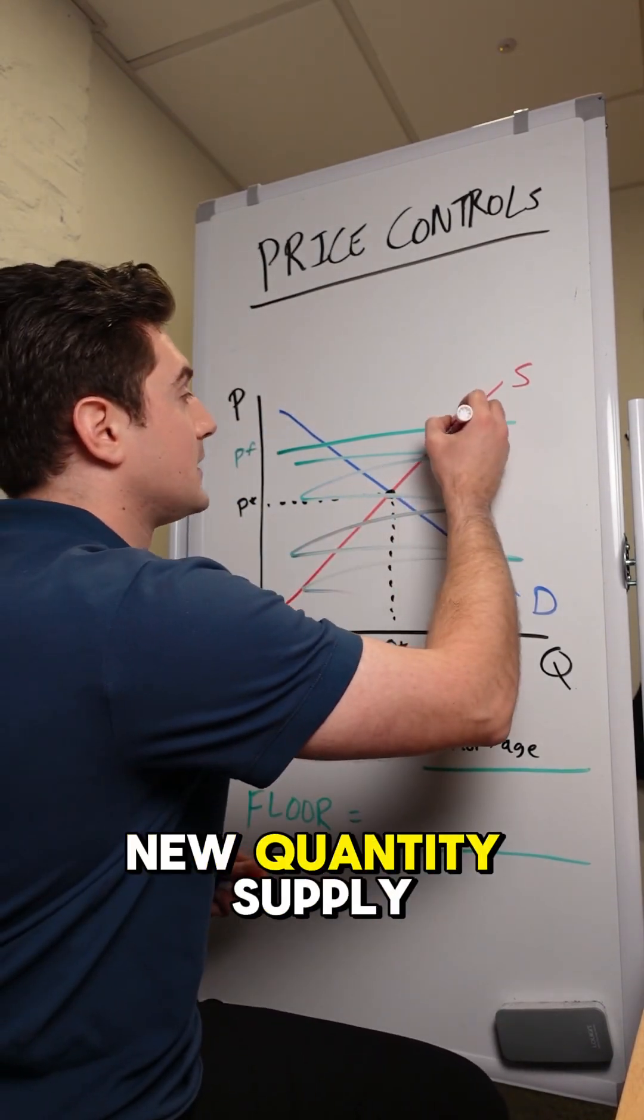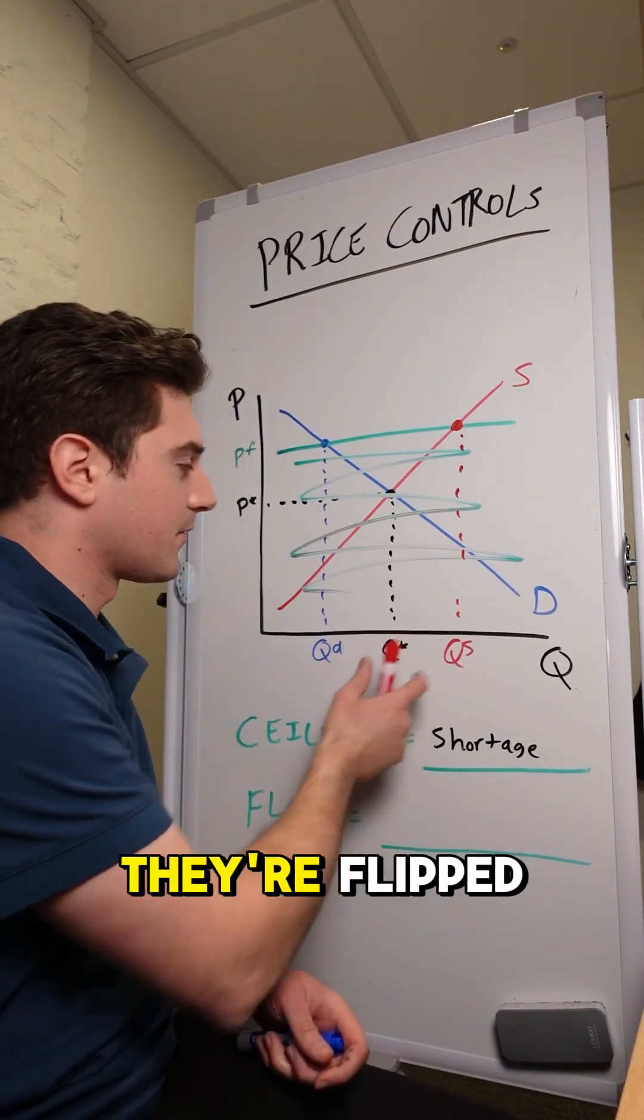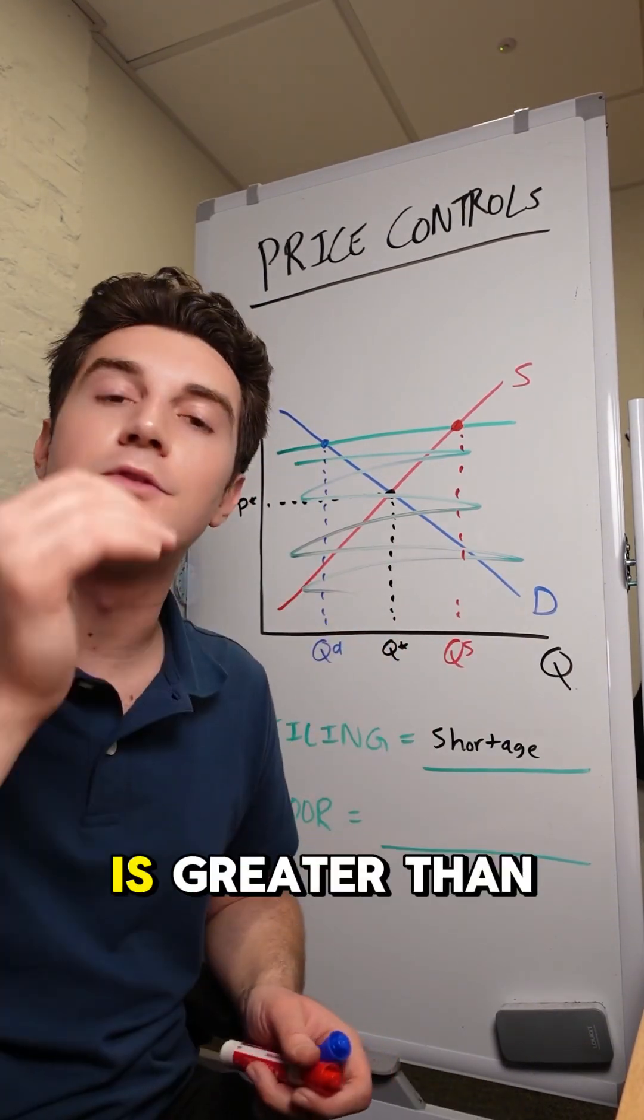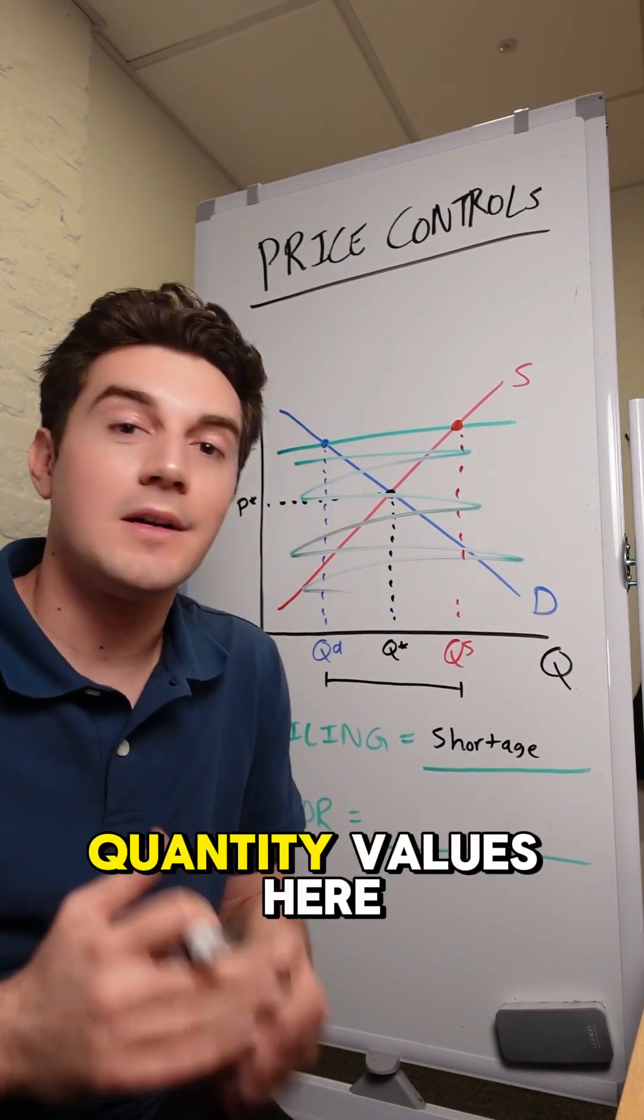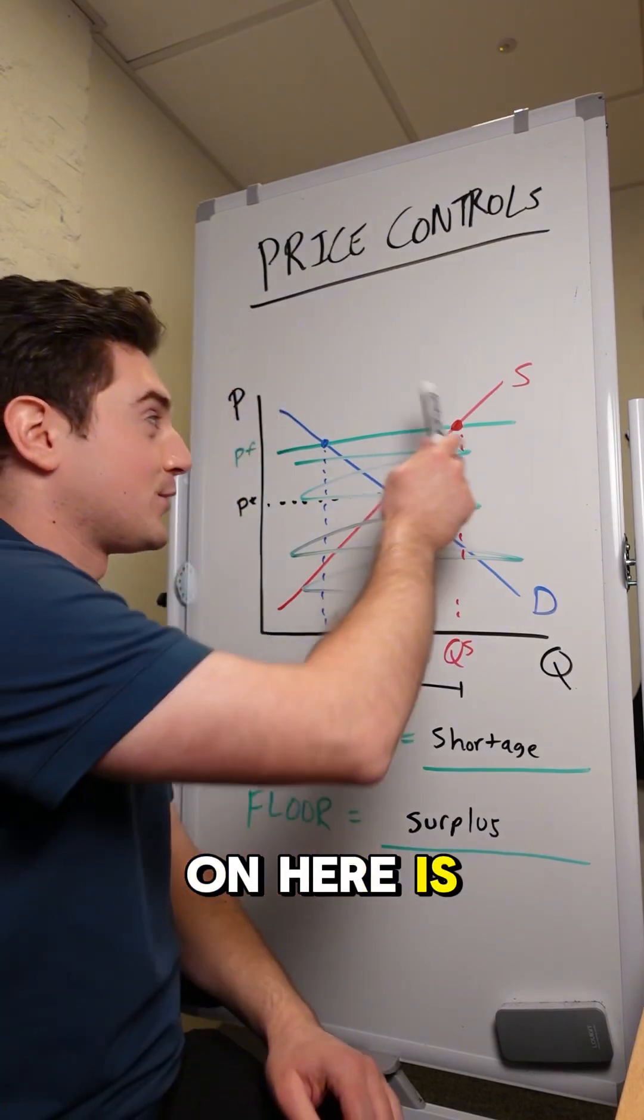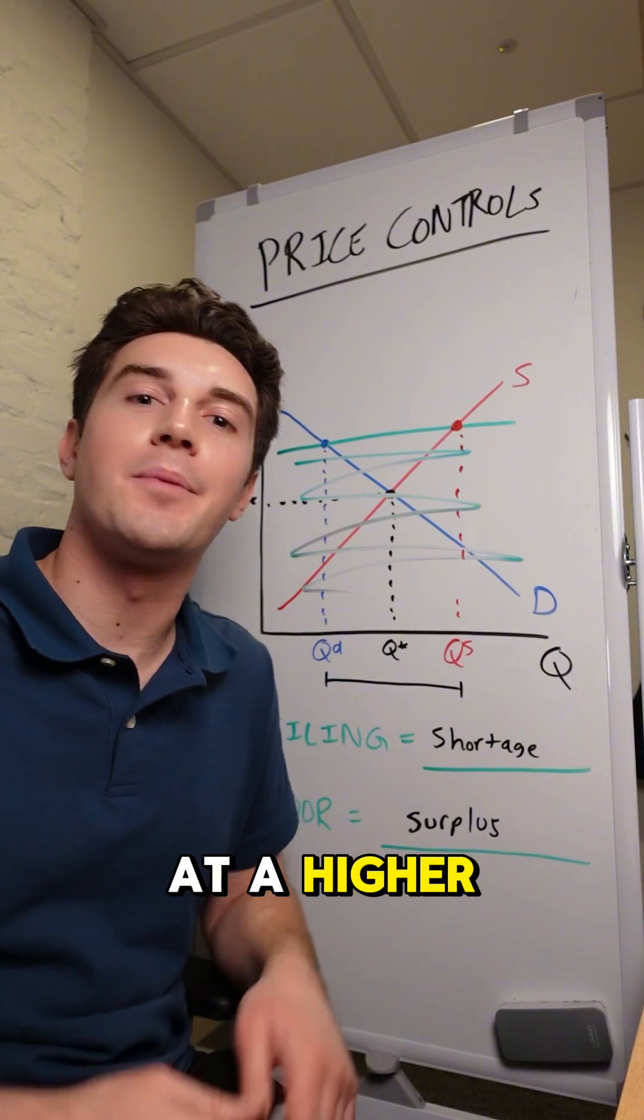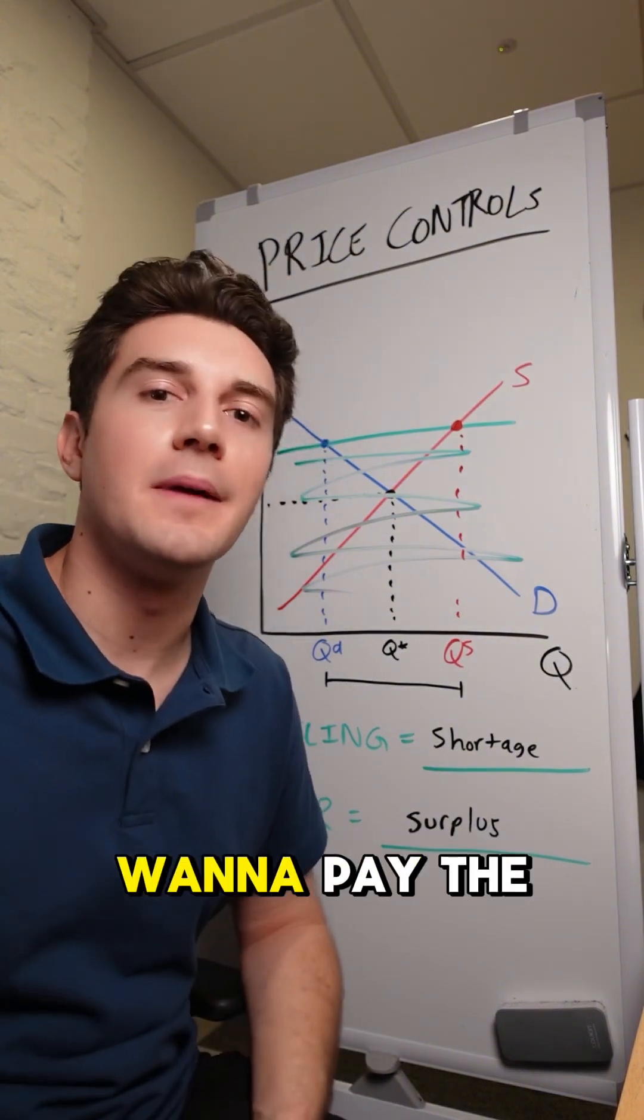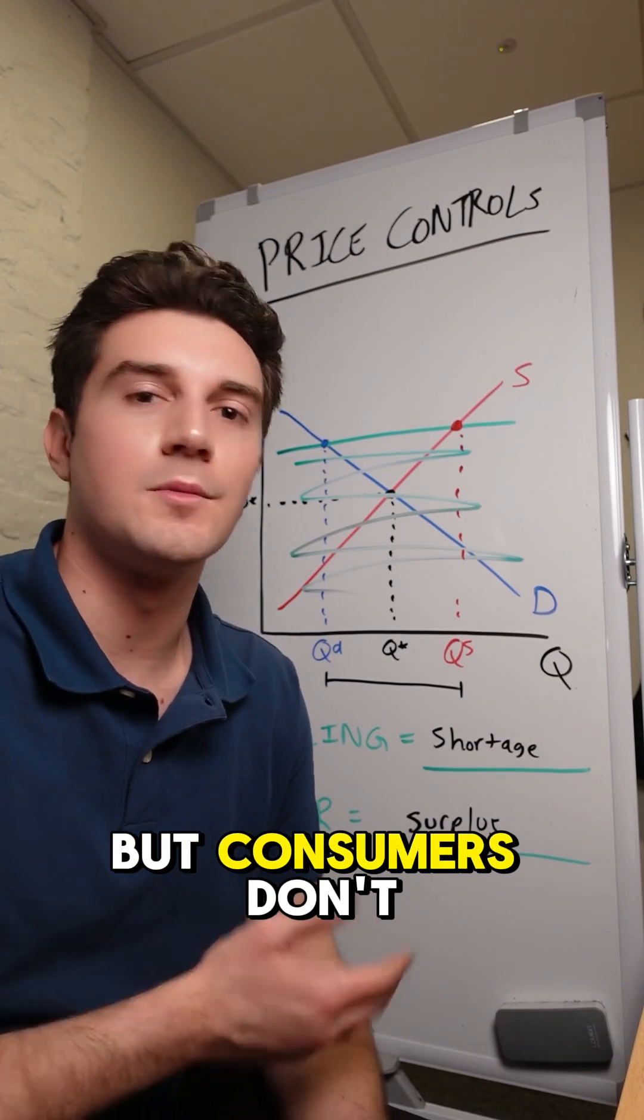This results in a new quantity supplied value and a new quantity demanded value. Except this time they're flipped. Our quantity supplied is greater than our quantity demanded, meaning that the difference between these two quantity values here is a surplus. Conceptually what's going on here is suppliers or producers are happy that now they can sell their goods at a higher price, but consumers don't want to pay the higher price. So there'd be a surplus of units that producers want to sell, but consumers don't want to buy.